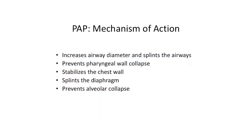What PAP does is expand the airway. It also helps with lateral pharyngeal wall collapse, which is a very small subset of sleep apnea in children — instead of anterior-posterior collapse, they have a lateral wall collapse. It also splints the chest wall, splints the diaphragm, and prevents alveoli from collapsing. So it starts at the nose and works at every level.